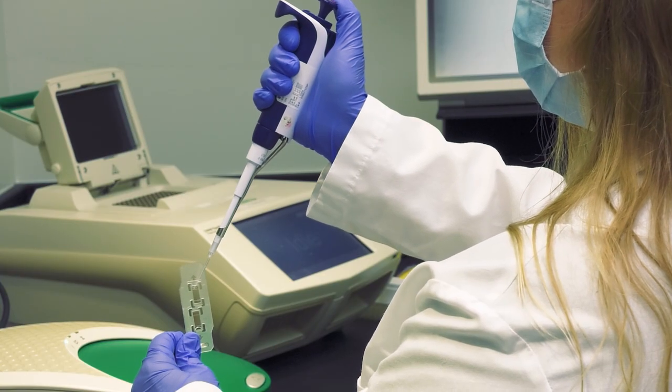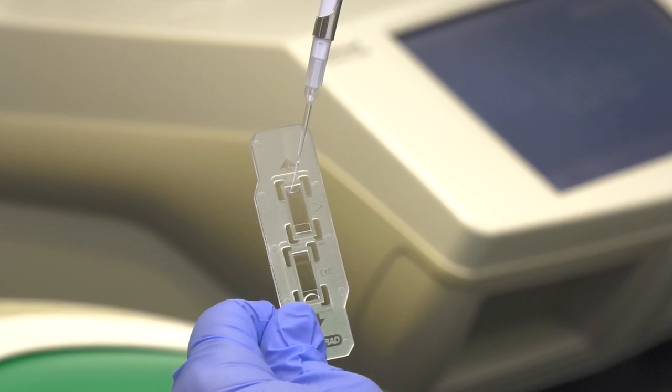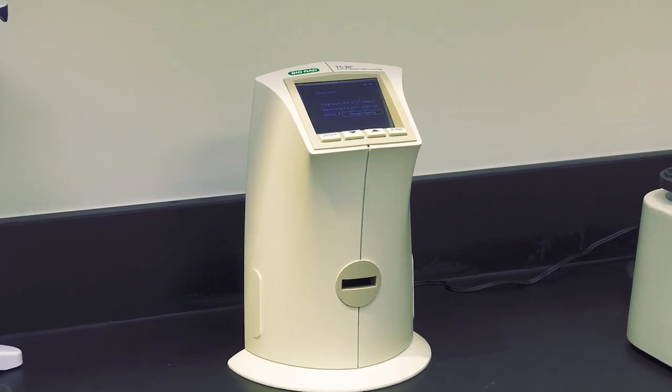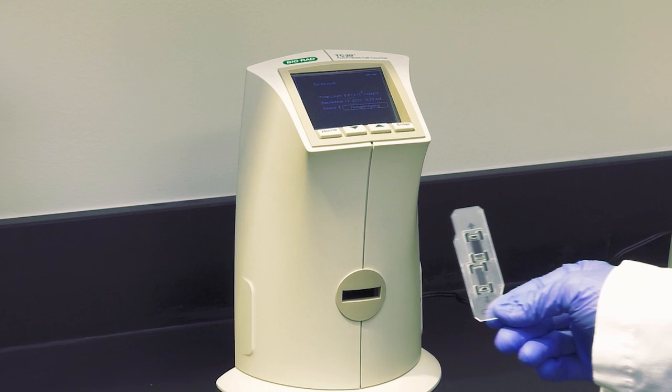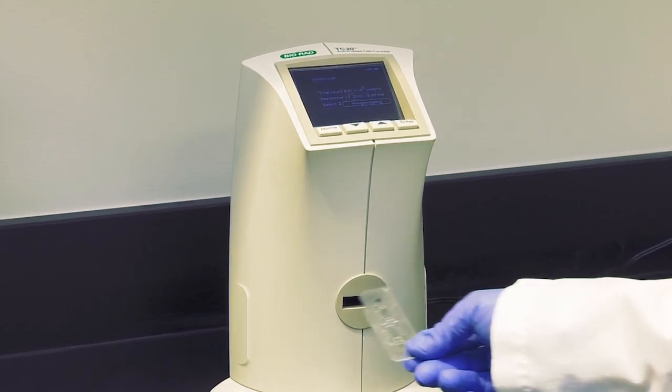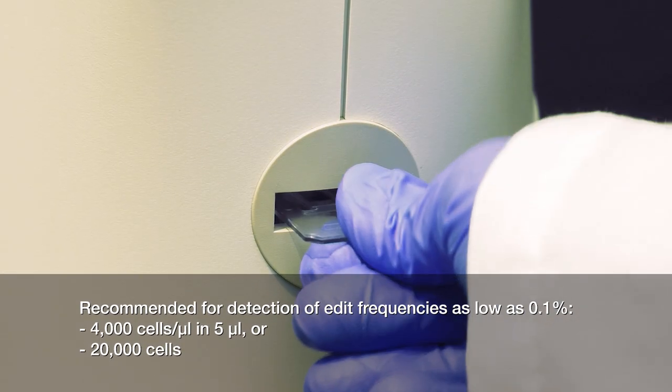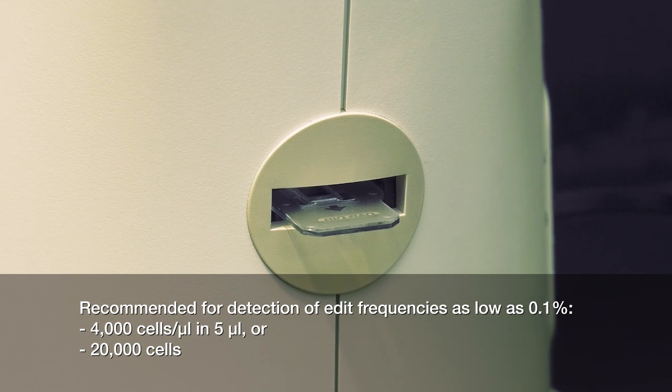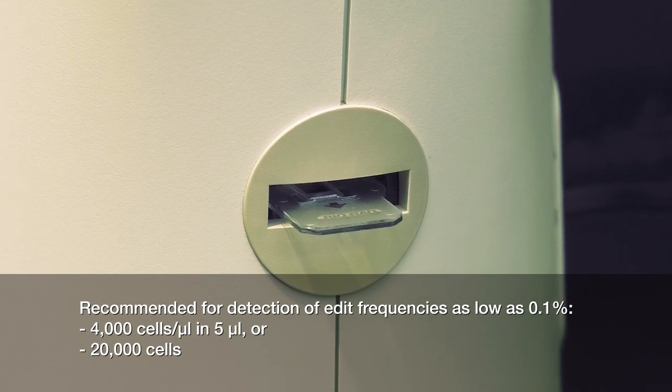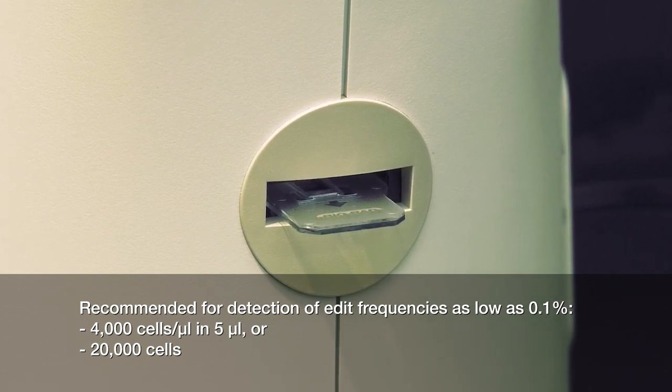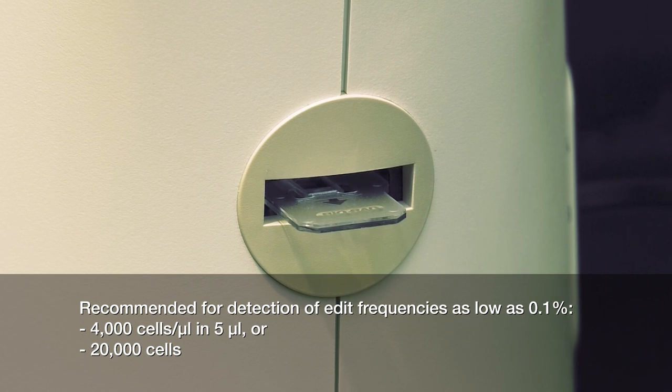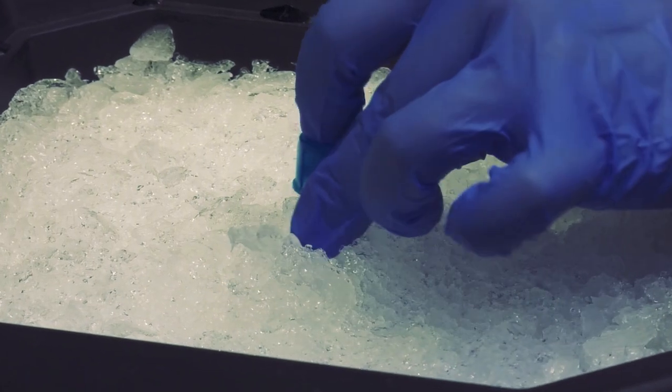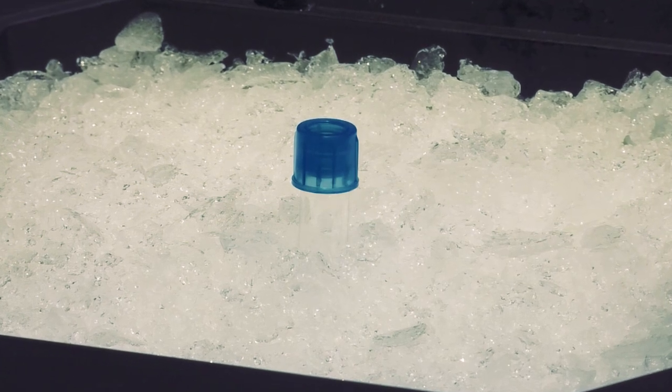Next, count your cells. We recommend checking replicates with BioRad's TC20 automated cell counter for an accurate cell count and assessment of cell viability. A count of 4,000 cells per microliter in 5 microliters, or 20,000 cells total, is recommended for detection of an edit frequency down to 0.1%. Keep cells on ice until they are added to the DDPCR reaction.